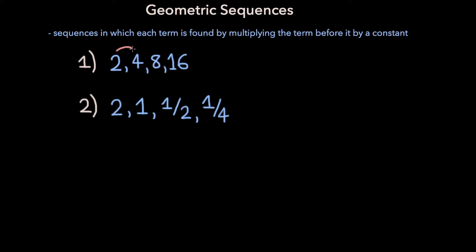In this first sequence, to get from 2 to 4, you have to multiply by 2. And then to get from 4 to 8, you have to multiply by 2 as well. And the same is true for getting from 8 to 16. Because the number you need to multiply a term by to get the next term is staying constant, this is a geometric sequence.